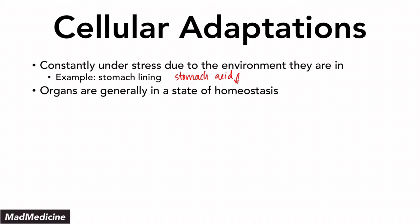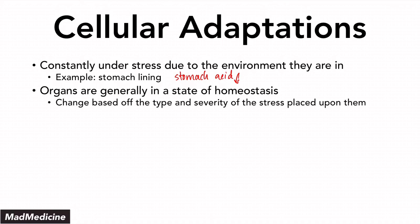Because our cells are able to adapt to a certain level of stress, our organs are able to function properly within a certain range of stress. Once you exceed that stress — once such an amount of stress is placed upon an organ that exceeds the normal functioning level — your organ has to go through some changes to function properly. These changes are based on the type and severity of the stress placed upon the organ. An increase in stress will eventually lead to the growth of an organ, requiring an increase in its size.